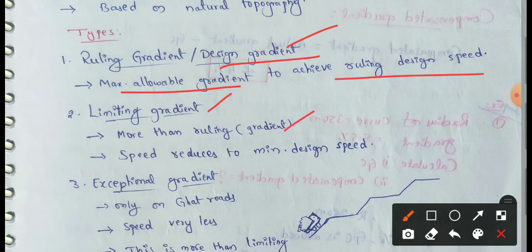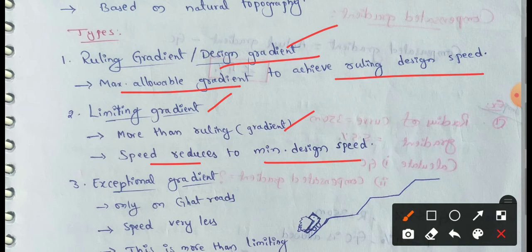Next, limiting gradient. Limiting gradient is more than the ruling gradient. The value of limiting gradient is higher than ruling gradient. Here, speed reduces to minimum design speed. Below minimum design speed, speed drops further — that range is the limiting gradient.